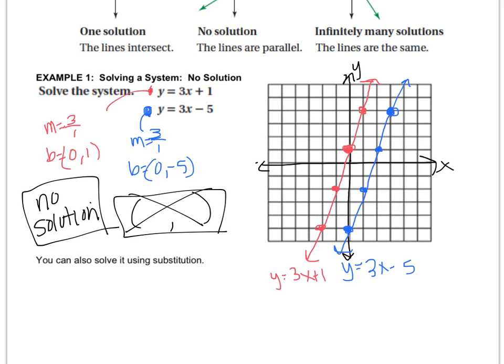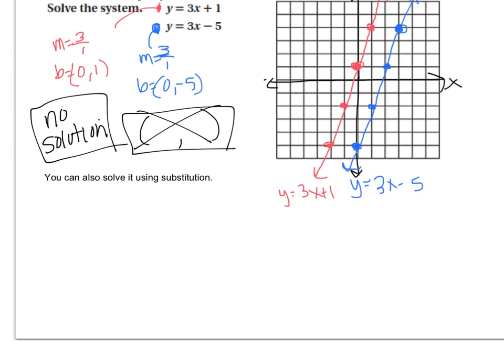You can also graph this using substitution, so let's practice with that. Remember, substitution is when you plug one equation into the other, and since both of these equations are equal to y, then they must be equal to the same thing. So when we do substitution, we take one equation, and if it's equal to a variable, we plug that into the other. So since this equation equals y, and this equation equals y, then they equal the same thing, so I can say that 3x plus 1 equals 3x minus 5, because essentially I'm saying that y equals y.